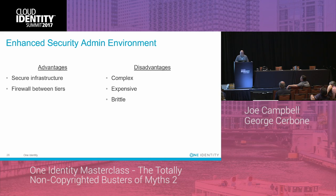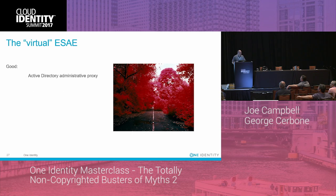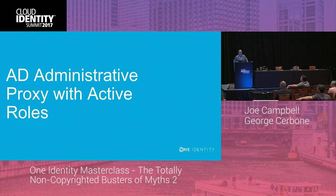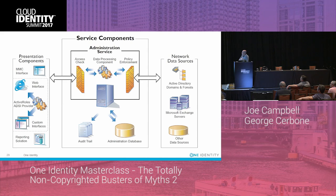Working with my colleagues, we came up with this idea of a virtual red forest, with a couple of tiers. There's the 'good' option: an Active Directory administrative proxy. There's 'better': add password vaulting to that. And if you want the super-deluxe Cadillac version, you can adopt what I'll call just-in-time active administrative control. At the basic level, the most important piece is an AD administrative proxy — we ship this with Active Roles, but you can do it with other technologies. It's a logical, not necessarily physical, architecture.